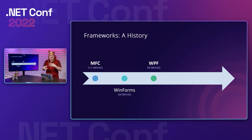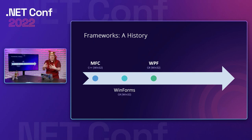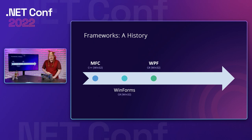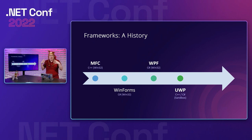Each of these platforms was the latest and greatest way to build applications, but didn't necessarily supersede the work done before it. You still see apps being built with all these technologies as we move forward. Then in the Windows 8 and Windows 10 timeframe, we got Universal Windows Platform — UWP — which brought the latest touch device interactions, permissions and sandboxing, targeting both C++ and C# developers.